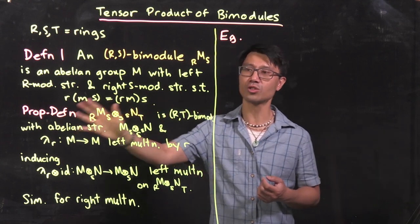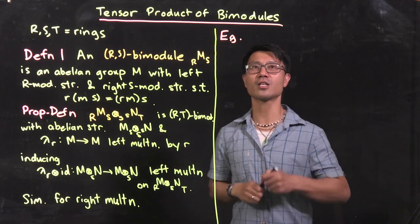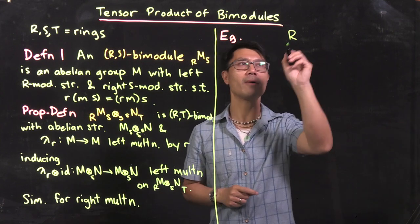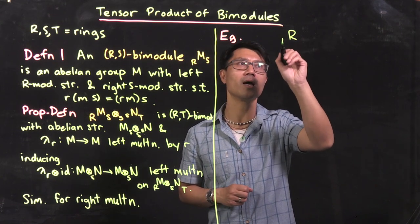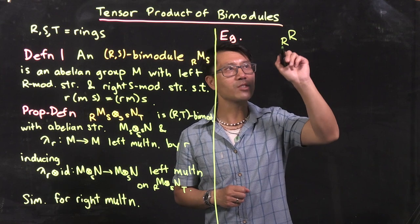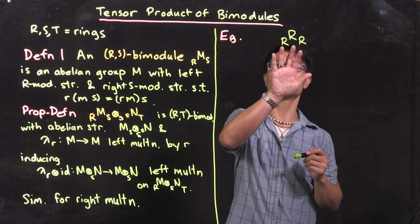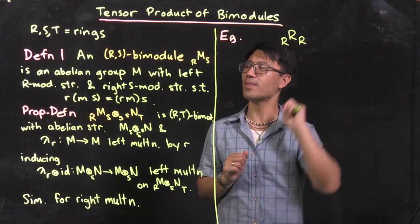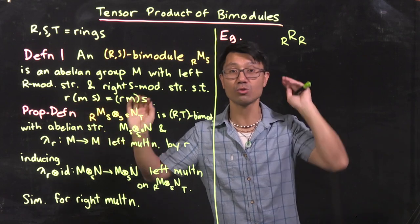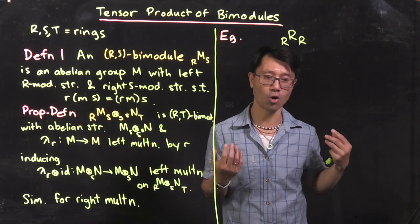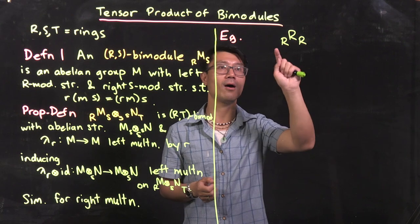Before moving on to tensor products of bimodules, let's look at some examples. The first example: the ring R itself. If you have any ring, you can use ring multiplication as scalar multiplication. Left multiplying by elements of R makes it a left R module, and you can do the same on the right, making it a right R module. The bimodule associativity condition is just the usual associativity law in the ring. So R is an R,R-bimodule.